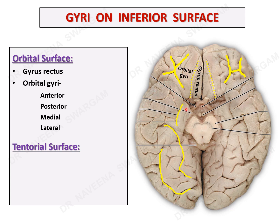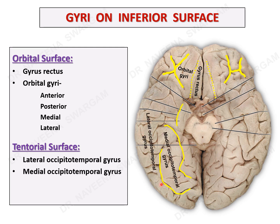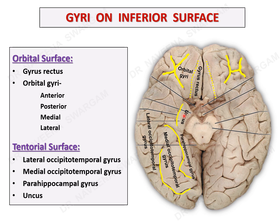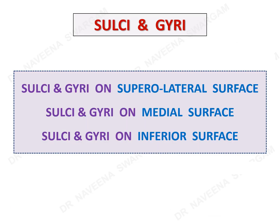The tentorial surface shows a lateral occipitotemporal sulcus, and medial to that is the collateral sulcus. In front of the collateral sulcus, near the temporal pole, lies a short rhinal sulcus. Gyri on the tentorial surface are the lateral and medial occipitotemporal gyri, separated by the occipitotemporal sulcus. The gyrus medial to the collateral sulcus is the parahippocampal gyrus, which is continuous in front with the uncus, lying medial to the rhinal sulcus. That covers the sulci and gyri on the different surfaces of the cerebral hemispheres.